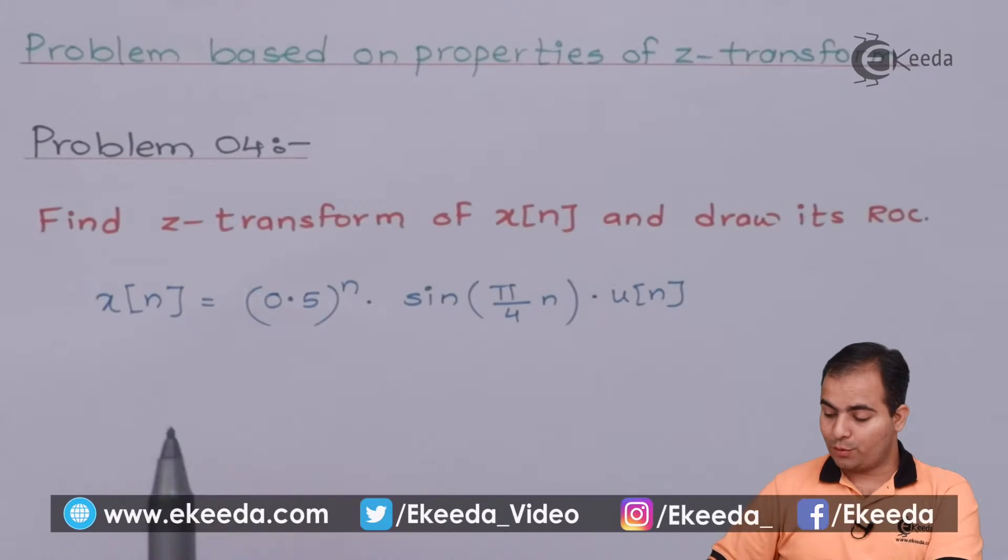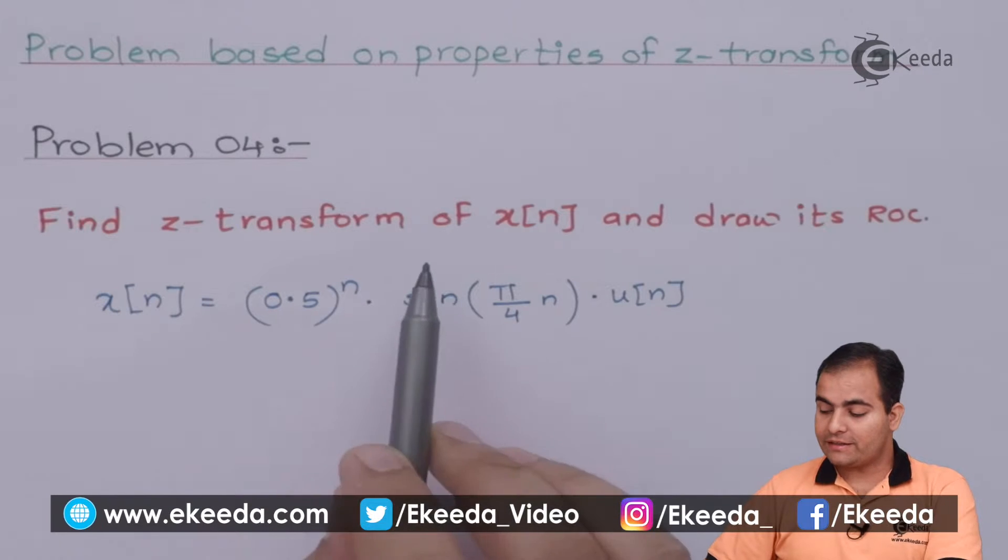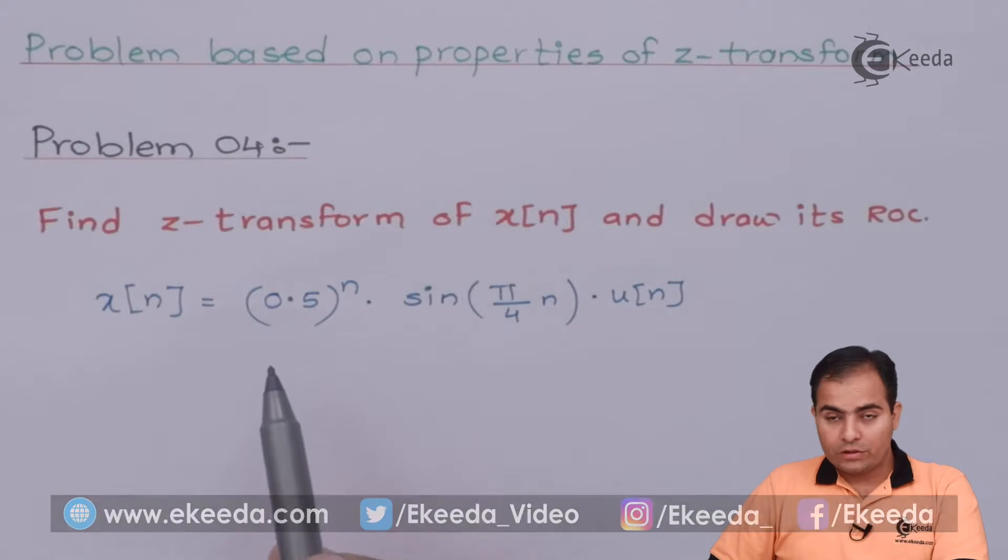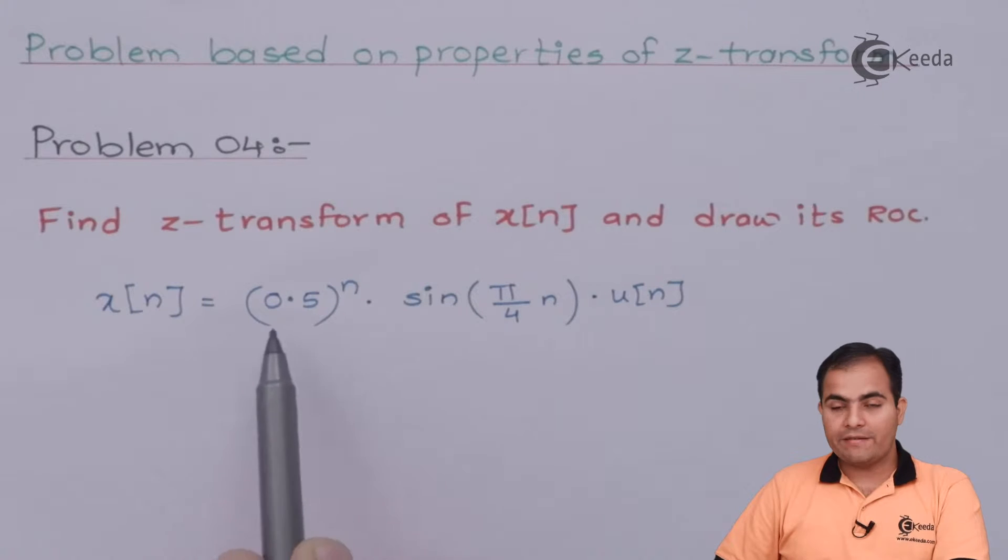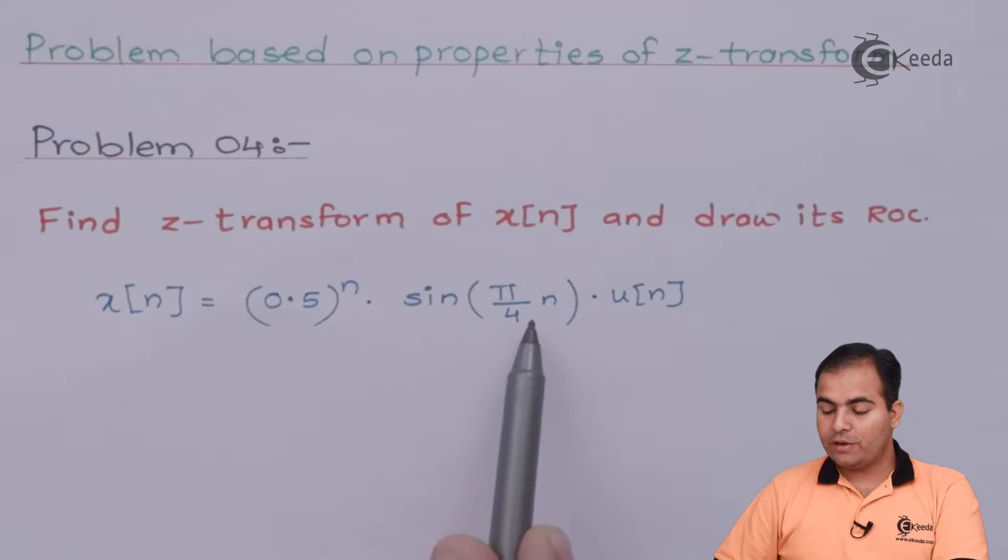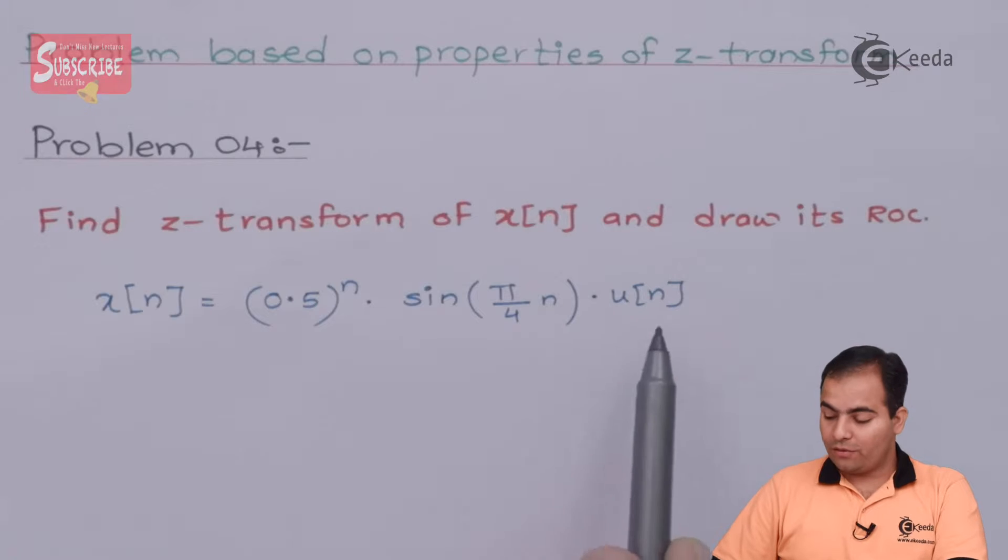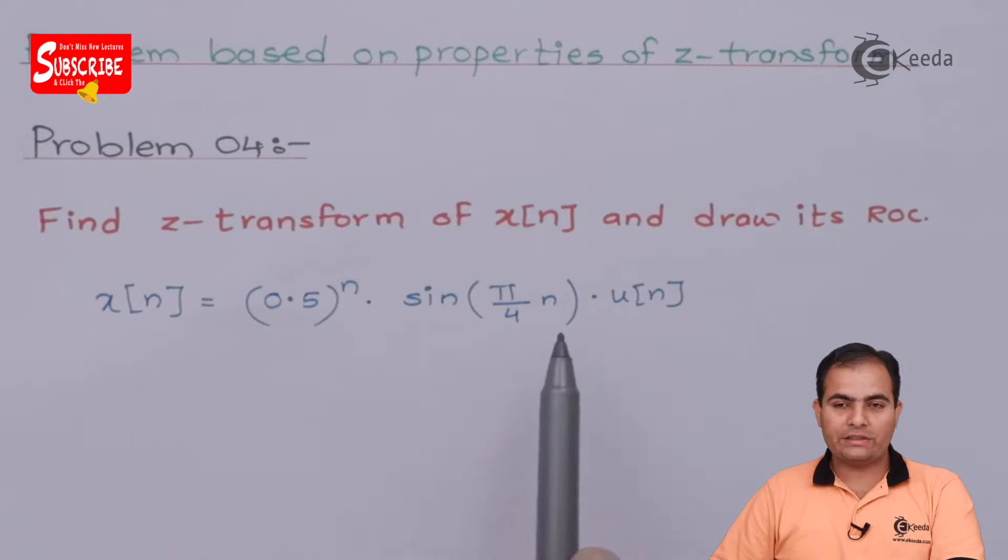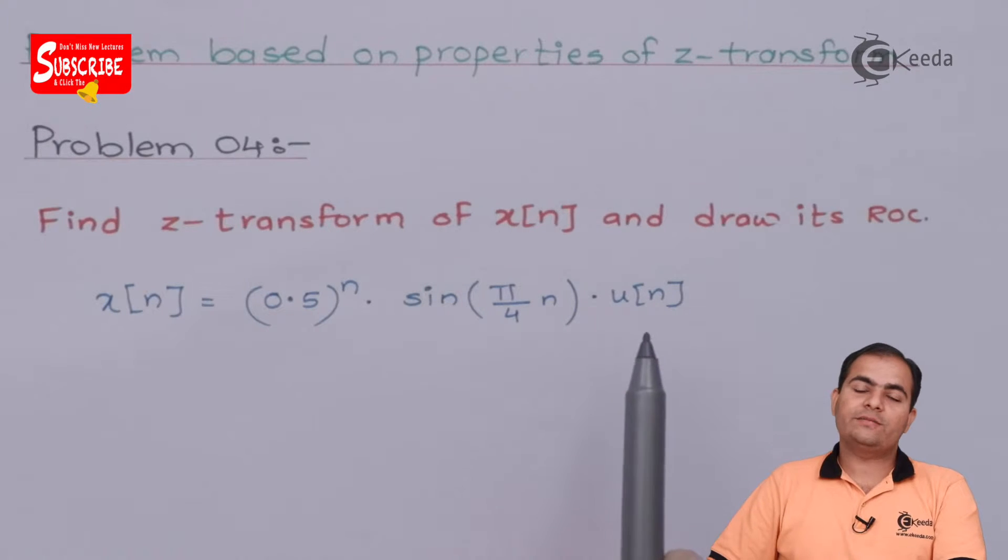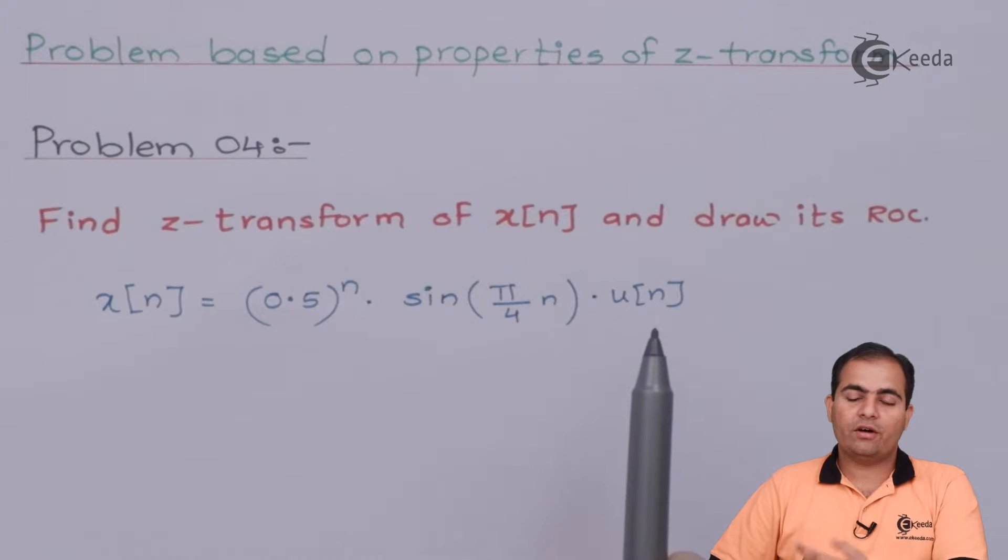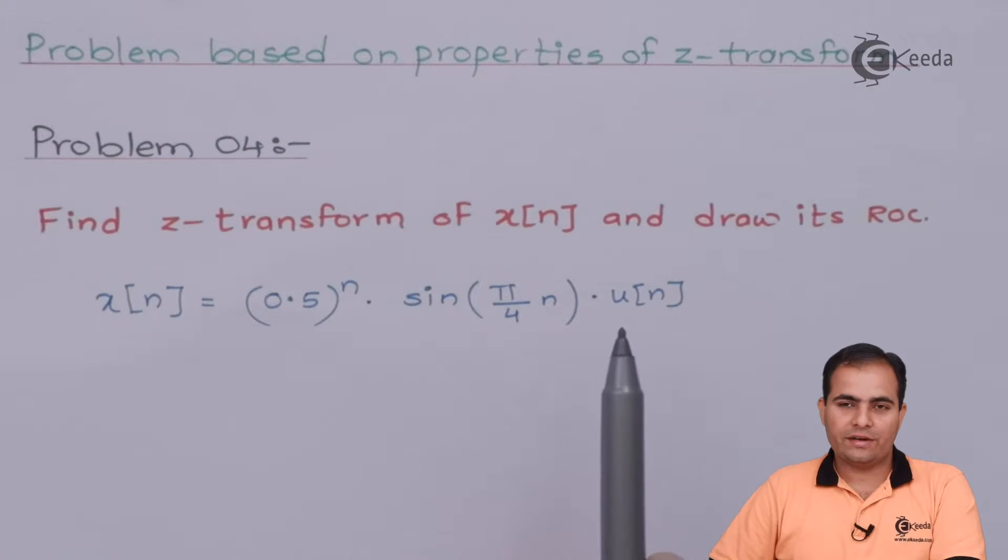The question is find Z-transform of x(n) and draw its ROC. The question is find Z-transform of (0.5)^n · sin(π/4 · n) · u(n). Now look at it, here the whole function is multiplied by u(n), which means our ROC is available outside the unit circle or the exterior part of the unit circle.